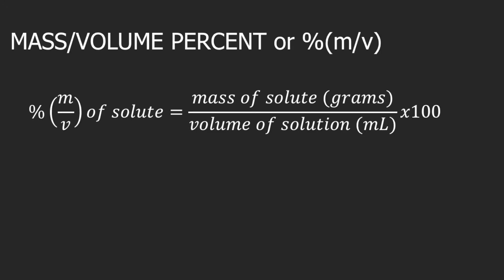In order to answer questions about mass per volume percent, you must know how to do dimensional analysis. If you are not familiar with dimensional analysis, you can check the description box — I will put a link to my video there. Mass per volume percent is also known as percent mass over volume, and the formula is: percent mass over volume = (mass of solute / volume of solution) × 100, where mass of solute must be in grams and volume of solution must be in mL.